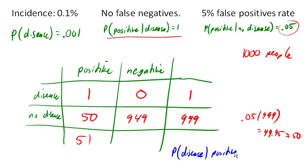How many people tested positive? 51. How many of them actually have the disease? 1. And that comes out to about 1.96%.